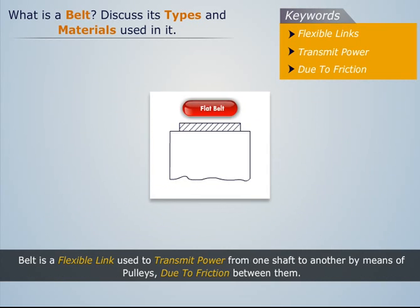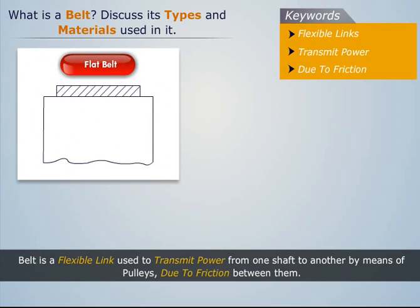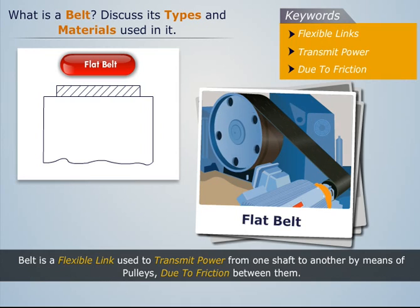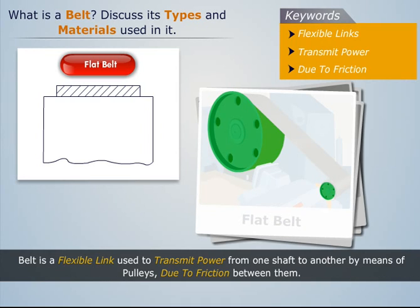Flat belt: It has two flat surfaces and is mostly used in factories and workshops where moderate power is to be transmitted from one pulley to another, and the pulleys are at most eight meters apart.